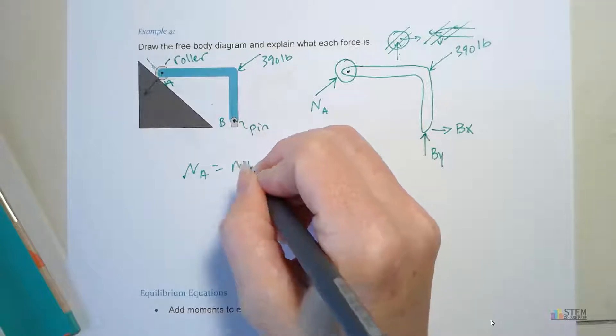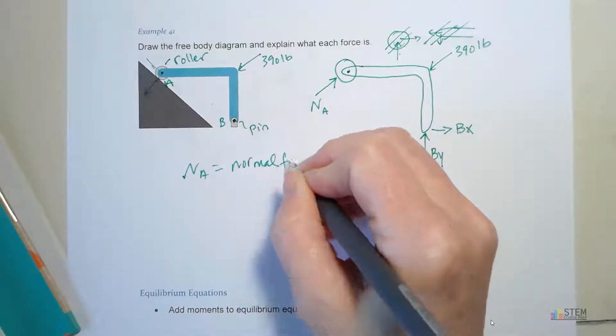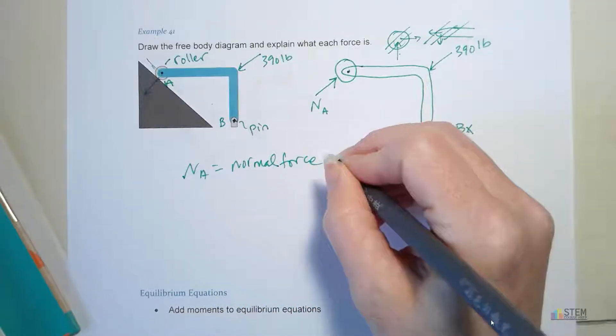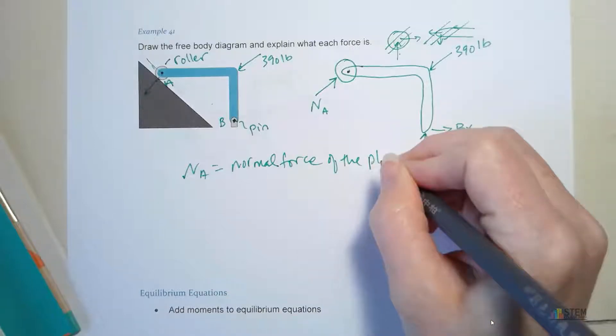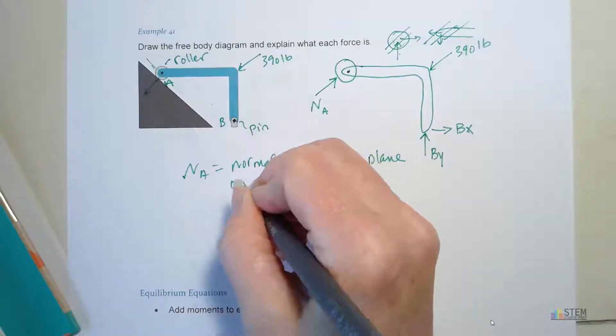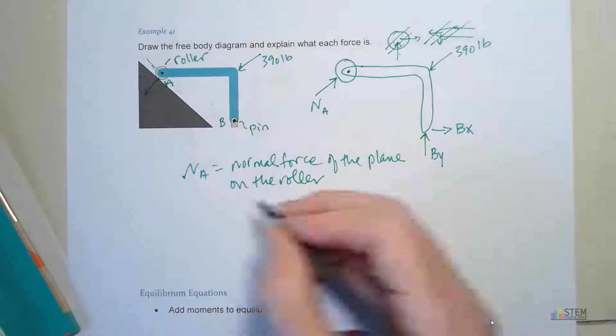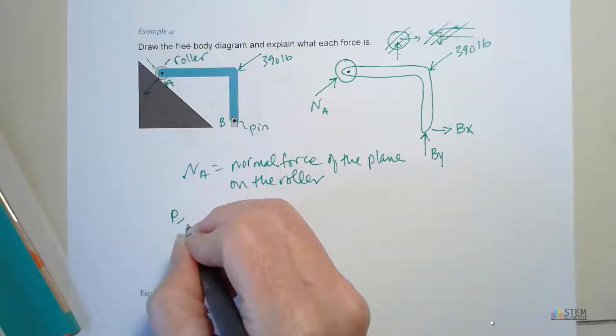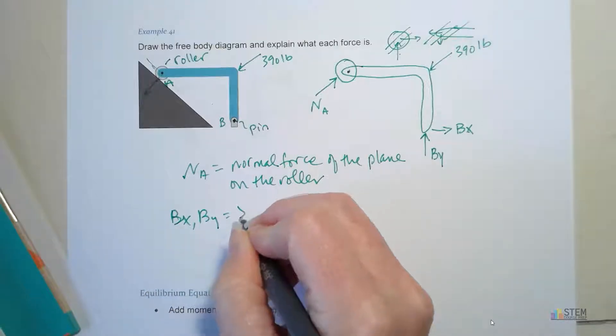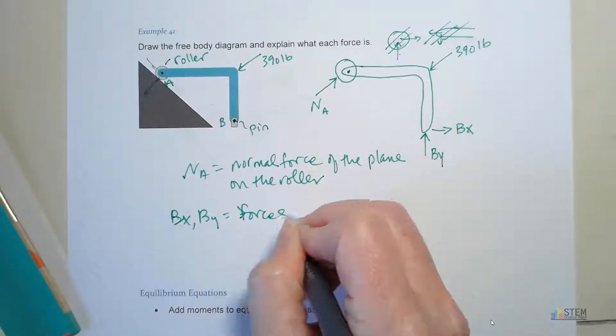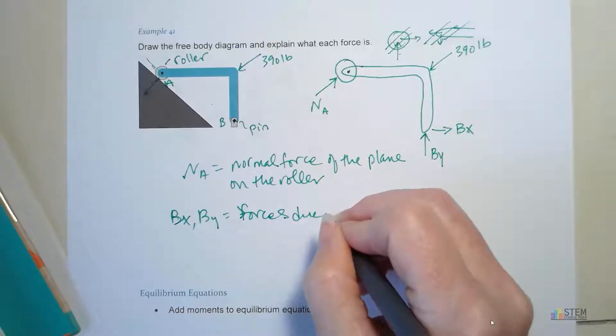NA, that's just our normal force of the plane on the roller. And then we've got these two forces here, so BX and BY. Those are forces due to the pin.